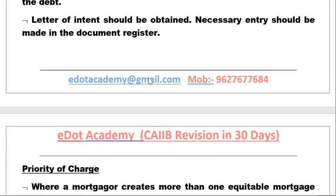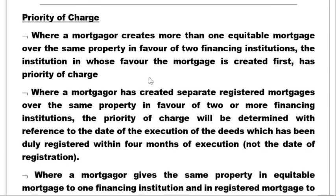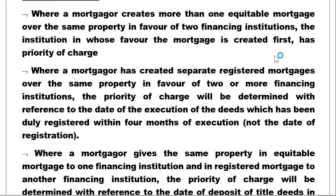Regarding priority of charge: where mortgages create more than one equitable mortgage over the same property in favor of two financing institutions, the institution in whose favor the mortgage is created first has priority of charge. Where the mortgagor has created separate registered mortgages over the same property in favor of two or more financial institutions, the priority of charge is determined with reference to the date of execution of the mortgage deeds — not the date of registration.